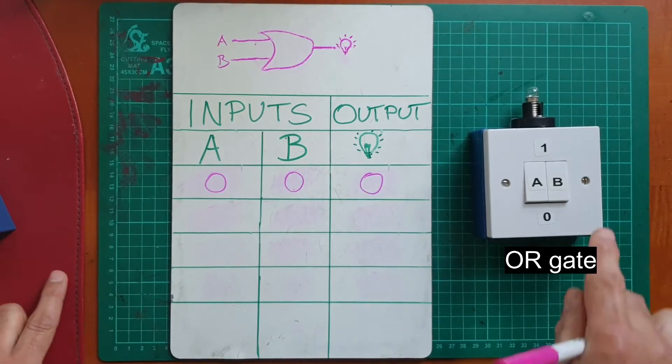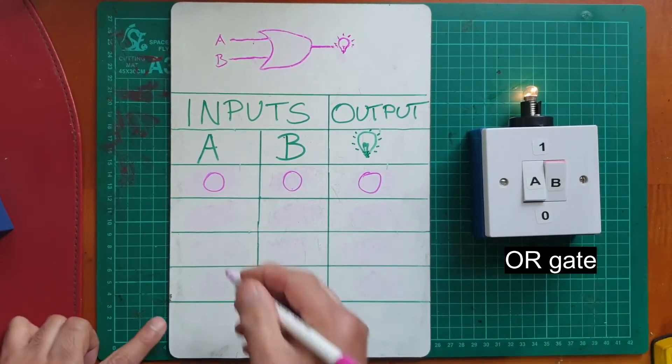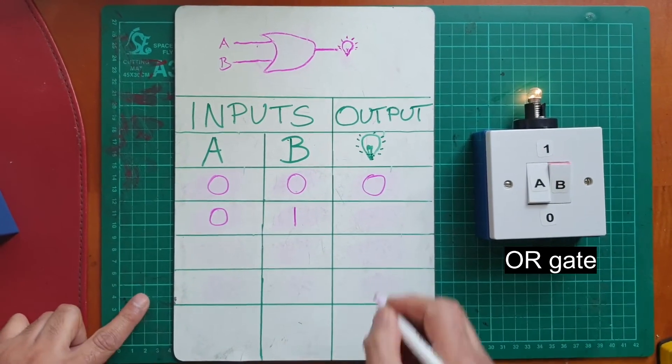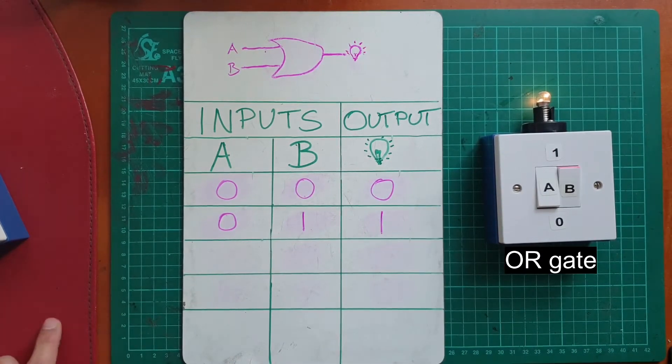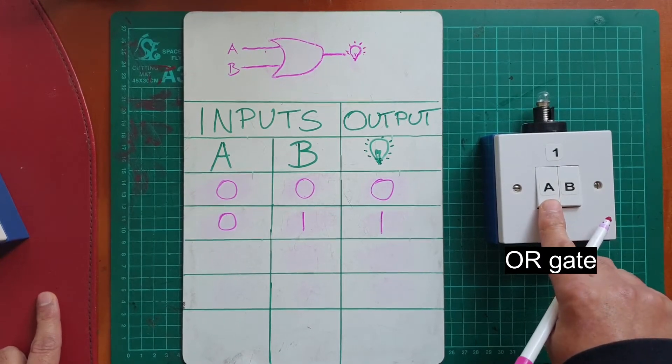Next, let's try B on. So that's A off, B on, we indicate with a one, and the light bulb's on, so we insert a one in the output. Let's try A on and B off.